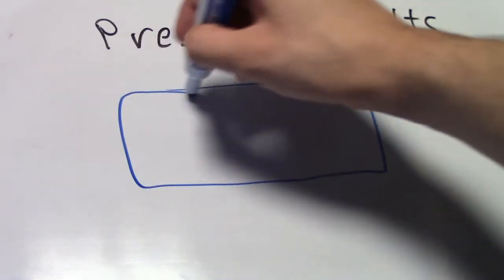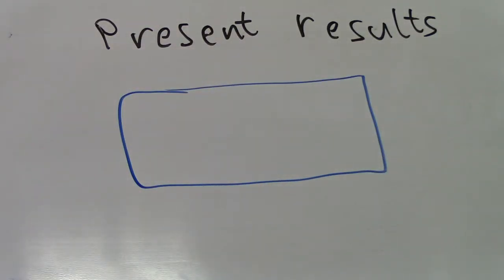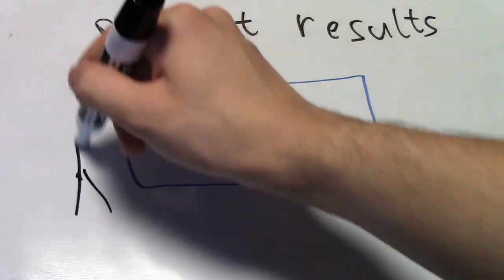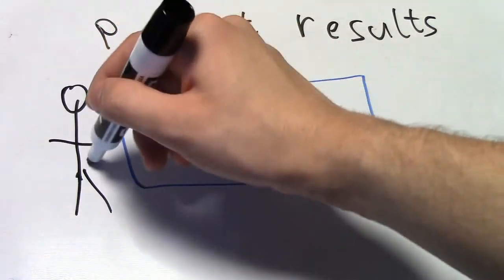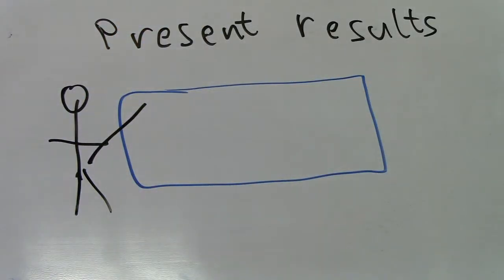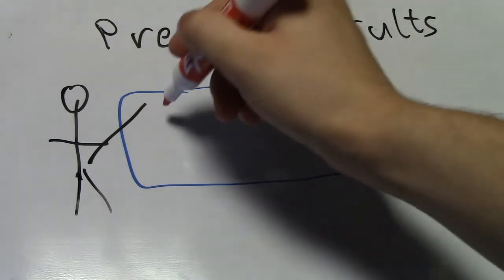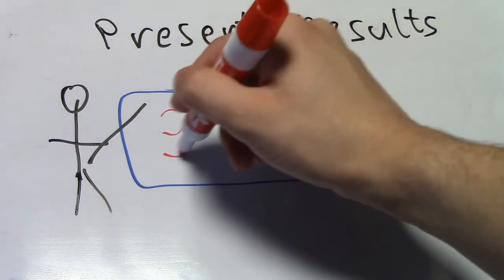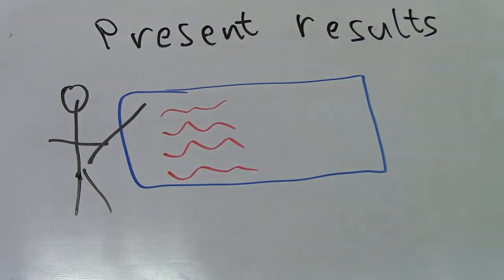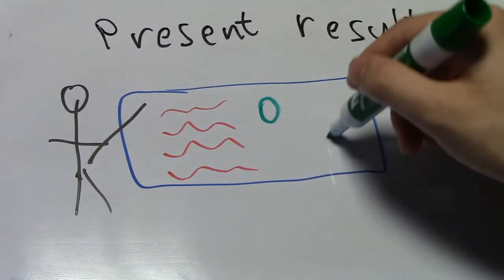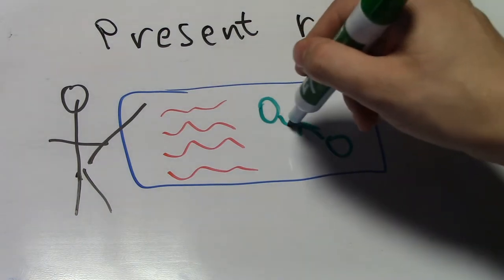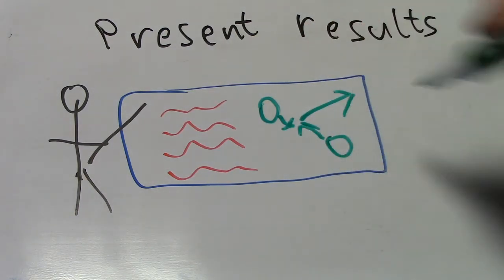Now, after you've performed tests to see how well your design will do in various situations, you need to present your results. Even if your design was a complete failure, present your results. The reason failure is as valuable as success in science is because it shows people what not to do. However, people are only going to know what not to do if you publish your results. So no matter what, publish your results.